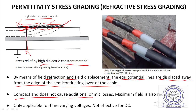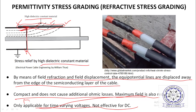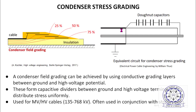This method is compact and does not cause additional ohmic losses. The maximum field is also reduced. However, it is only applicable for time-varying voltages — not effective for DC. For DC it is not applicable; only for time-varying AC and impulse voltages it is applicable.